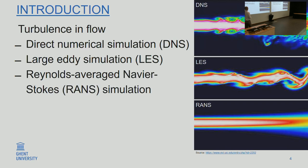If you go all the way down to RANS simulations — Reynolds Averaged Navier-Stokes — you get very smooth figures because all the small and large scales of the turbulence have been modeled. In an industrial context, RANS is still used very much. This is what you typically see, but the reality is of course much closer to what happens in a DNS.